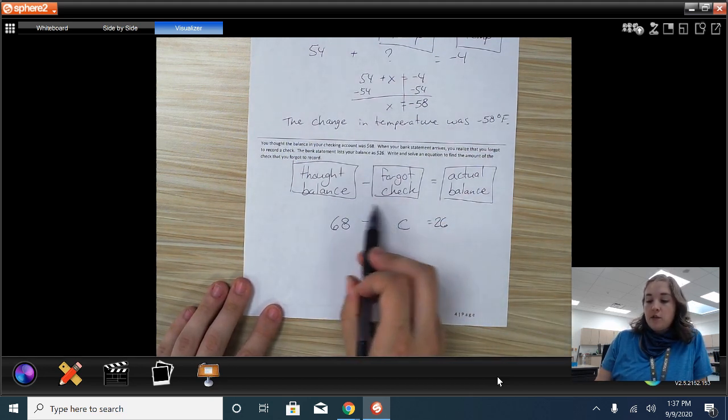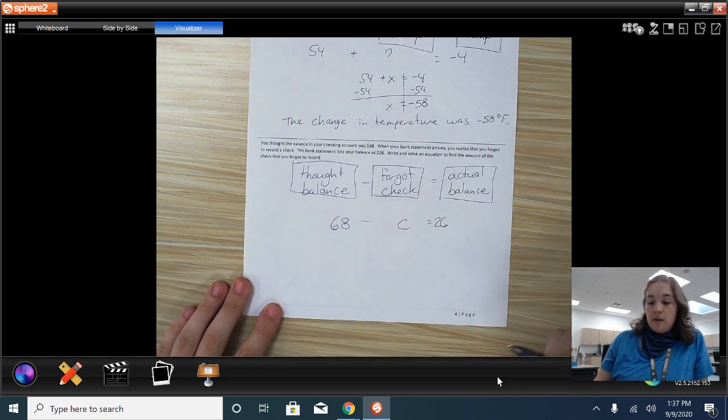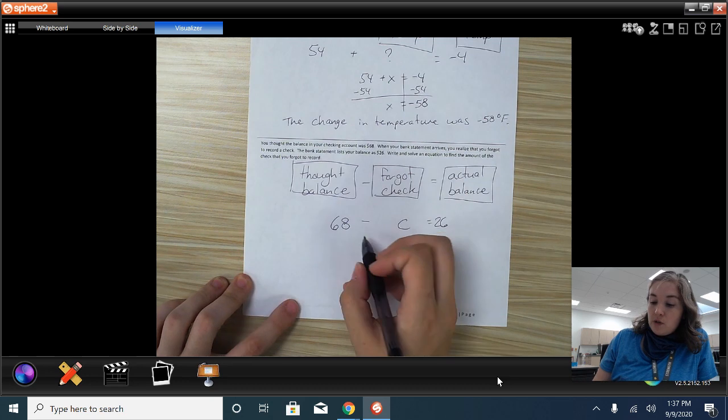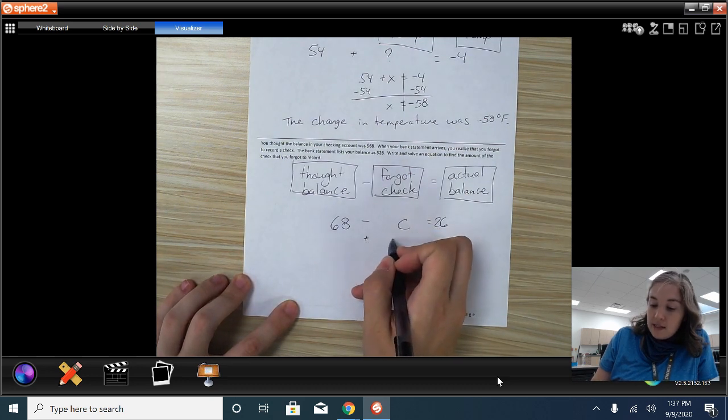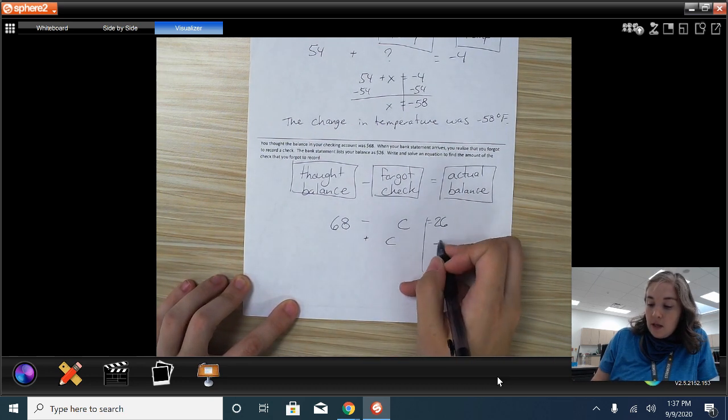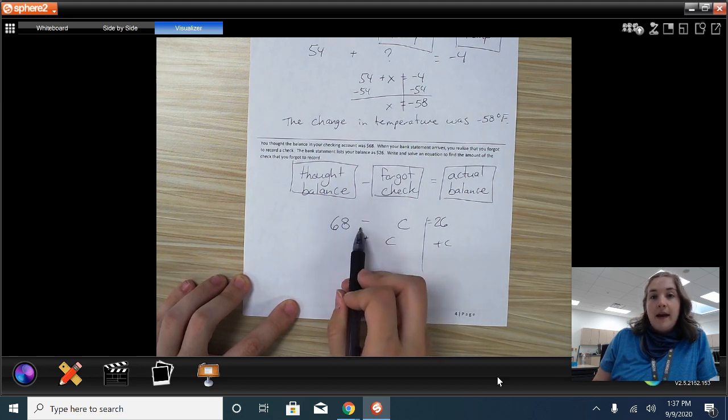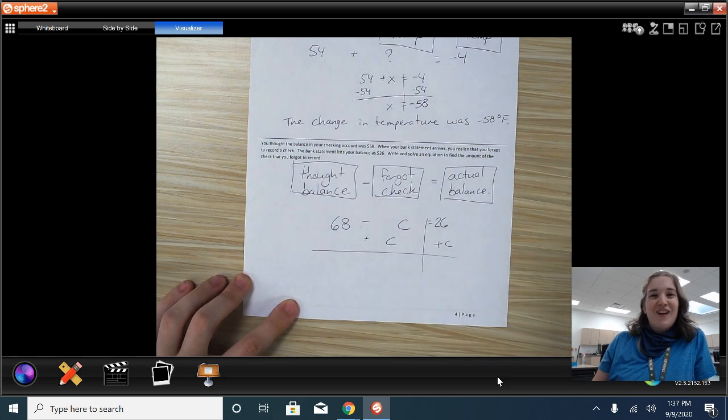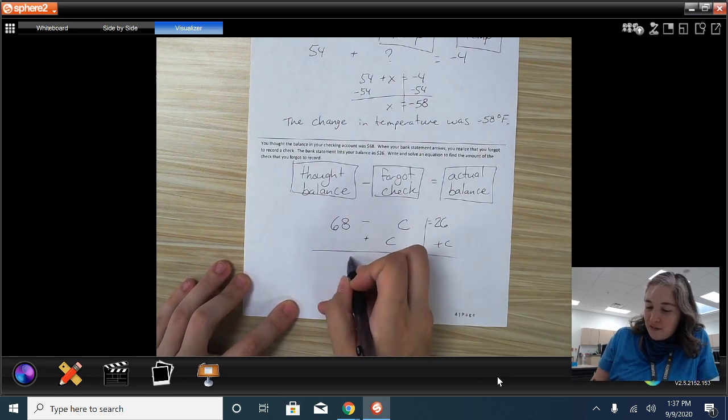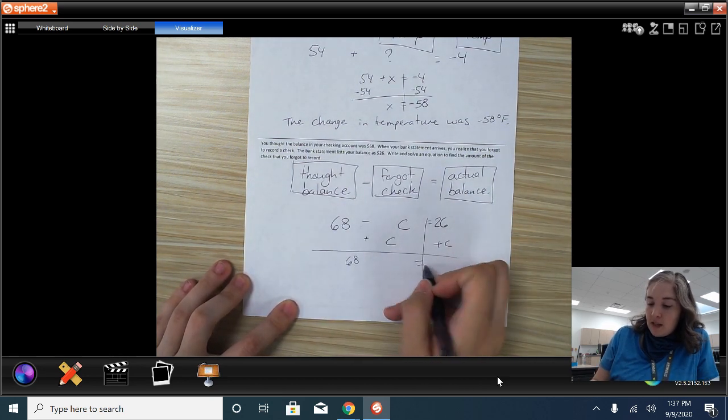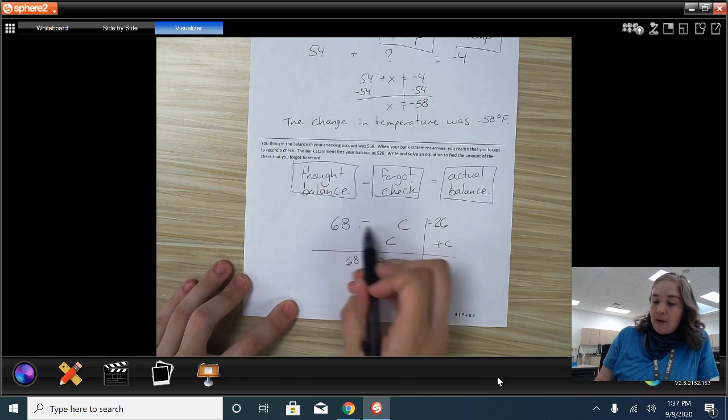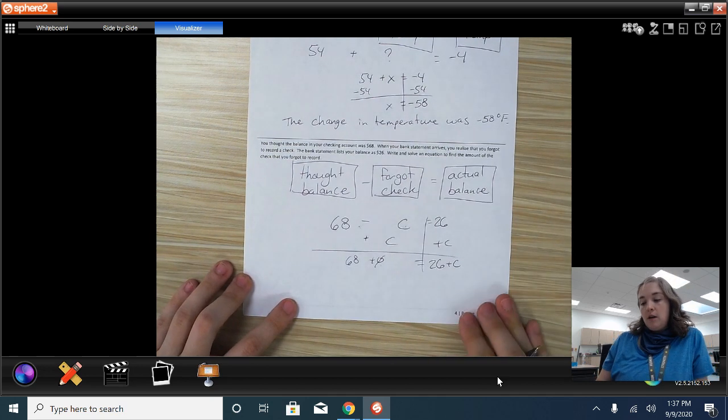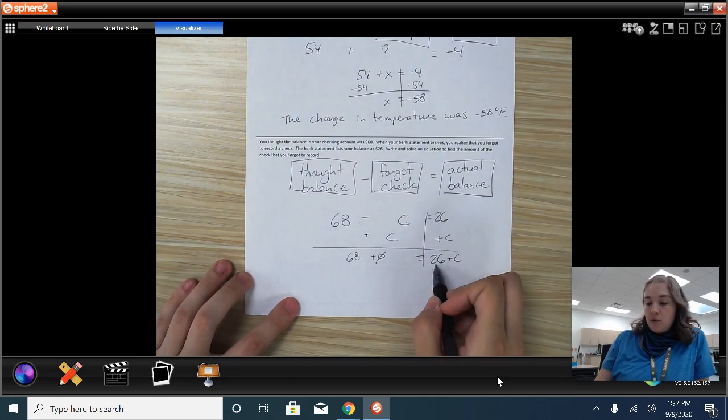So I need to figure out how much the check was that I forgot. So I am going to actually add C on both sides. And the reason for that is because I have a negative C here, right? I don't want to deal with negative numbers. I want to keep it positive, even in all the chaos. So we have 68 left on our left side, plus 0, minus C, plus C, 0 is out. And then we have 26 plus C on our right.